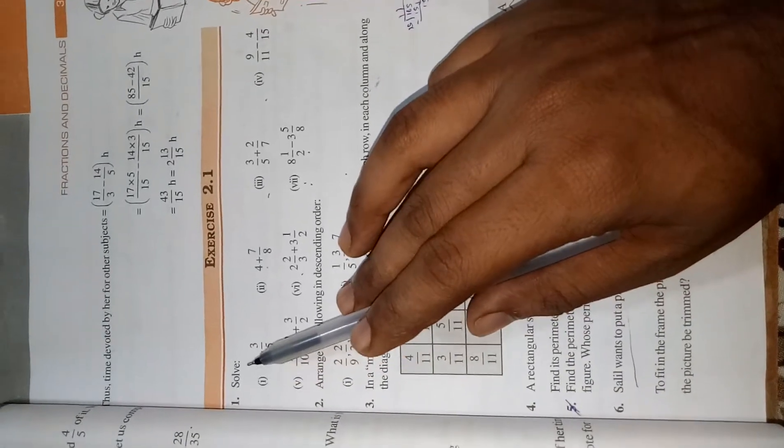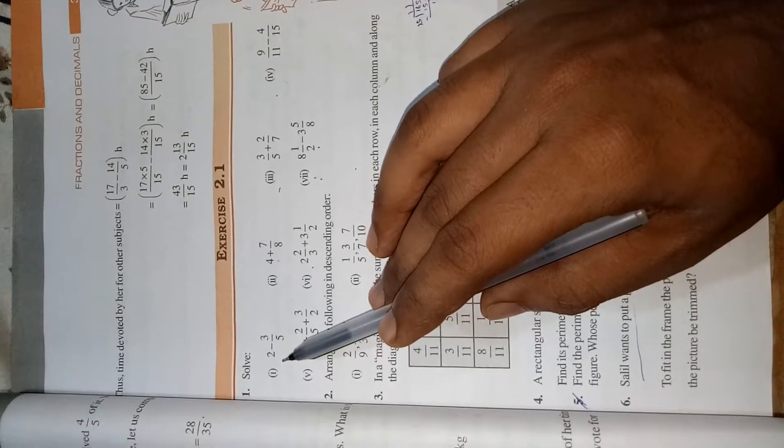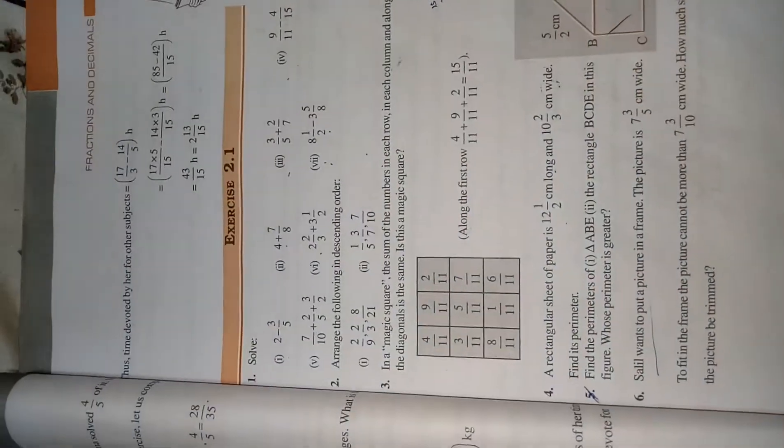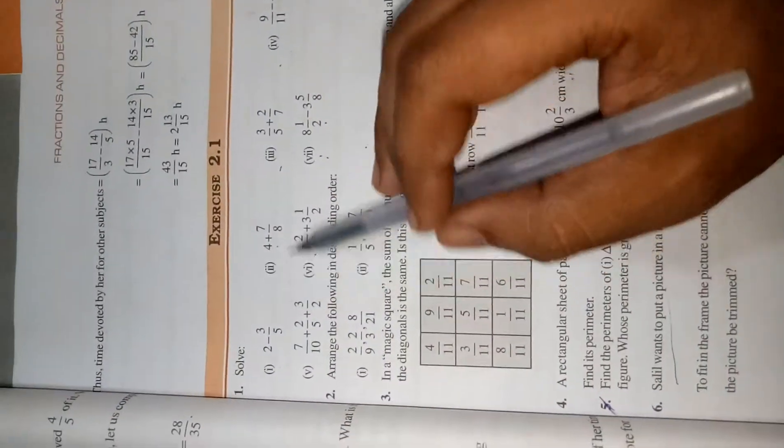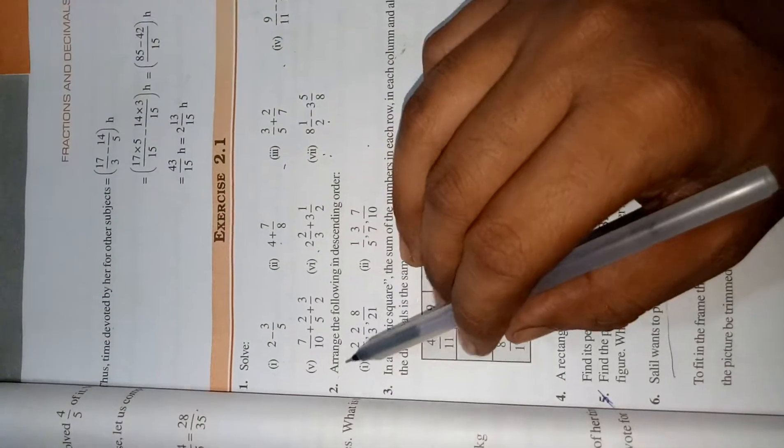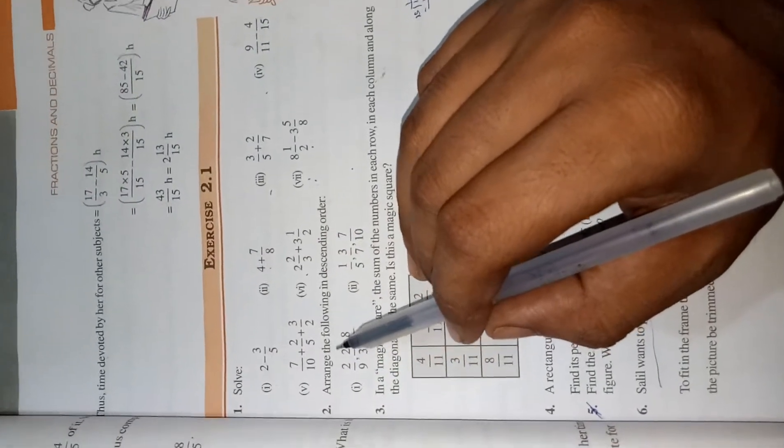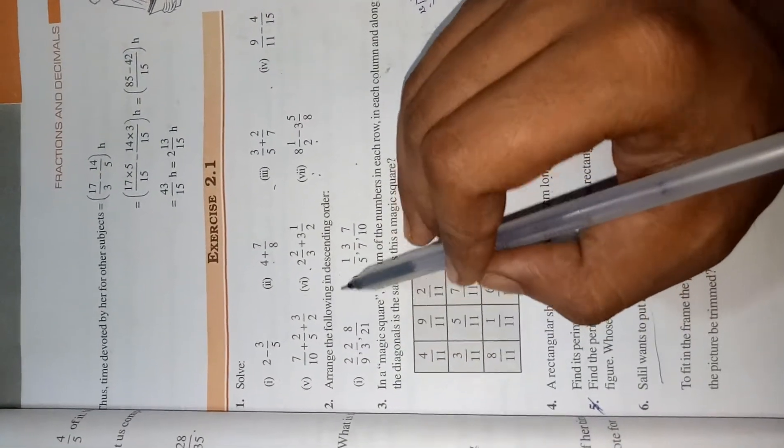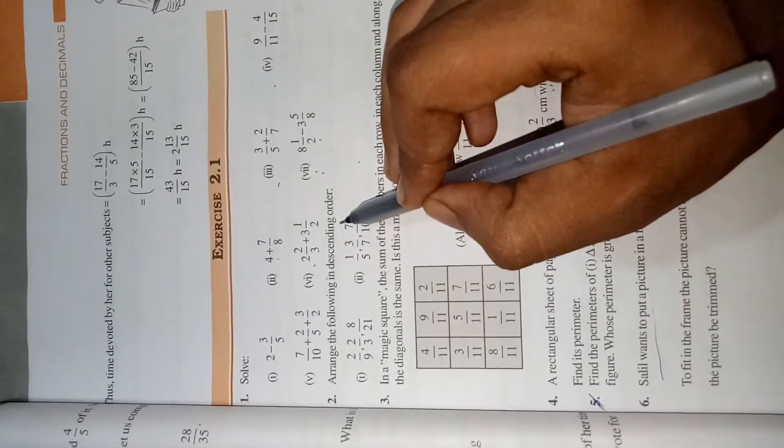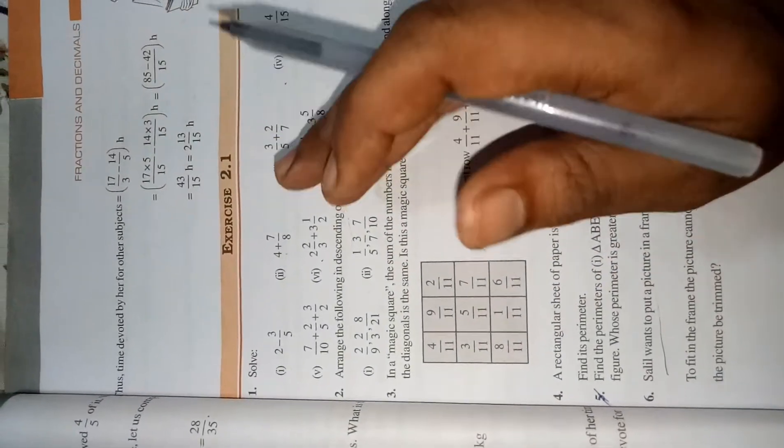First question solved. We have solved in our last video first and seventh. Now, look at the question number 2 and read it carefully in your textbook. Arrange the following in descending order. Descending meaning from bigger to smaller.